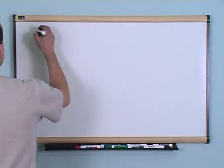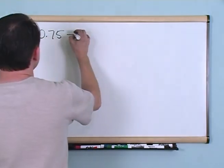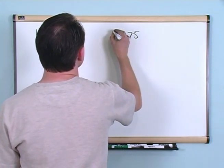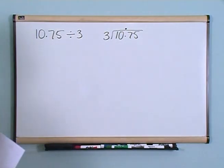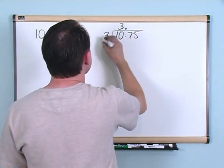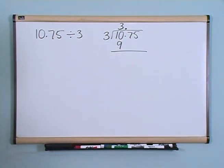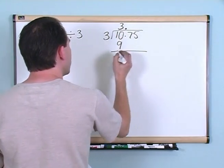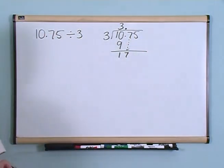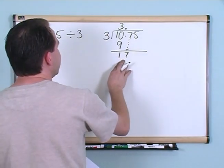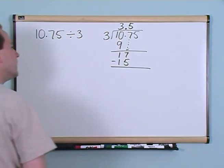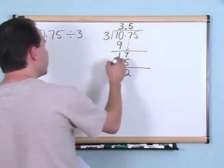What if you have 10.75 divided by 3? You write 10.75 divided by 3 and put your decimal up there, because that's where your answer is going to be. How many times can 3 go into 10? It can go 3 times, because 3 times 3 is 9, which is as close to 10 as I can get. 10 minus 9 gives me 1. Can 3 go into 1? No, but I drag down my next digit and make it 17. Can 3 go into 17? The closest I can get is 5, because 5 times 3 is 15. I subtract and get a remainder of 2.